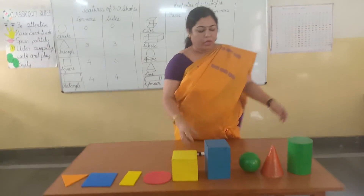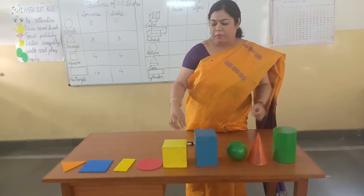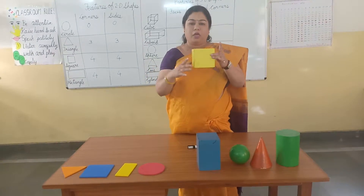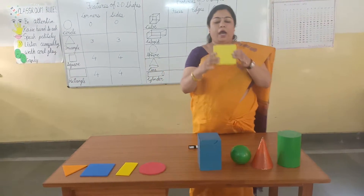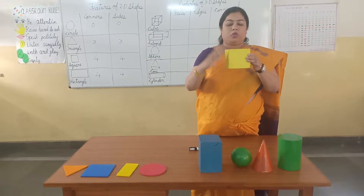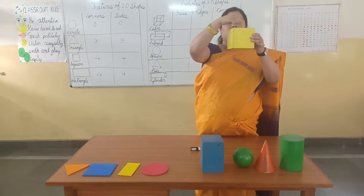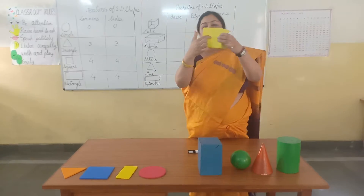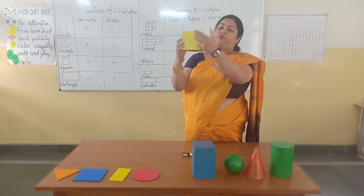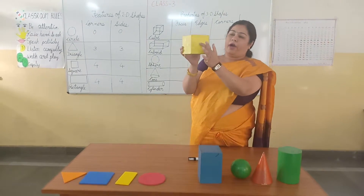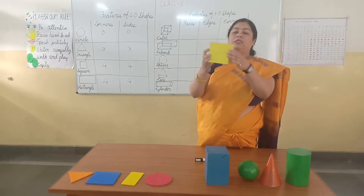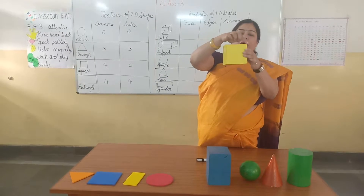This is all about 2D shapes. Now we come to 3D shapes. The first shape we are taking is a cube. You can count — cube has 1, 2, 3, 4, 5 and 6 faces.